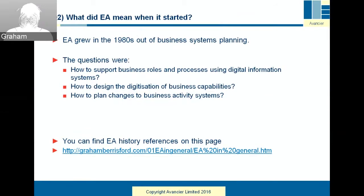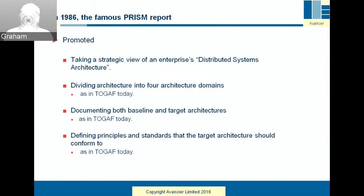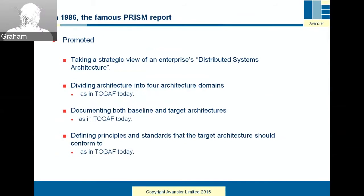I've put in a reference to some historical references you can find. Starting with what most people would say was the first definitive paper on enterprise architecture — although the term wasn't used — the PRISM report. It promoted taking a strategic view of distributed systems architecture, divided architecture into four domains, suggested documenting both baseline and target, defining principles and standards, and ensuring the target architecture conformed to them. All of those things you can see in TOGAF today, very prominently.